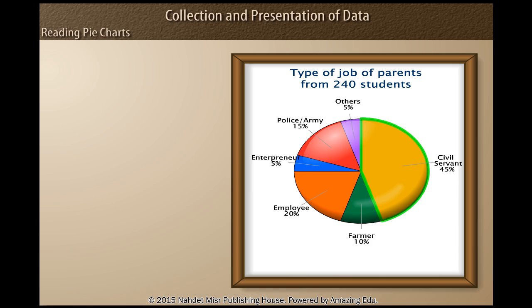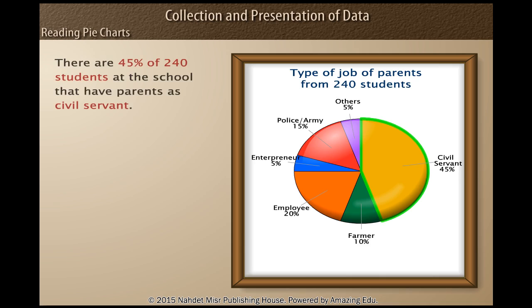For example, the job of civil servant is shown by a part of 45%. It means that there are 45% of 240 students at the school that have parents who are civil servants. Or, there are 45 over 100 times 240 equals 108 students.